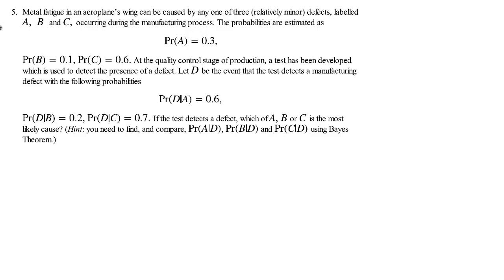In this question we tackle a classic problem where we have a test result which is supposed to detect a fault or an illness. Here it is a technical fault and we want to figure out what the probabilities are once we get a positive test result, or what's the probability that one of the underlying faults has occurred.